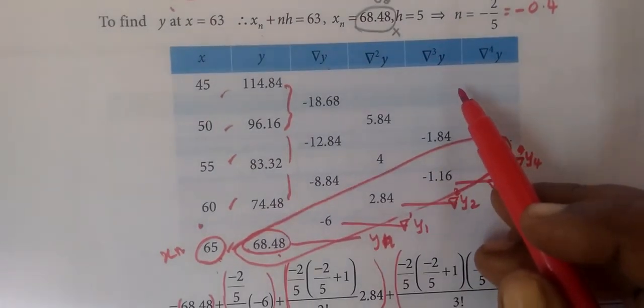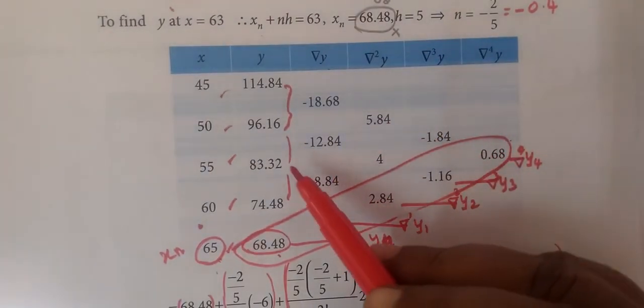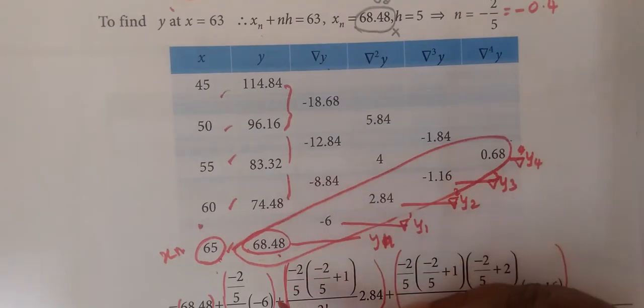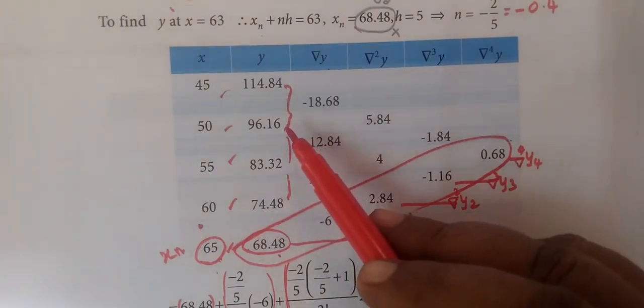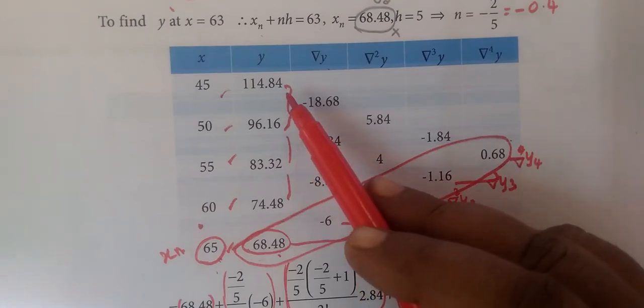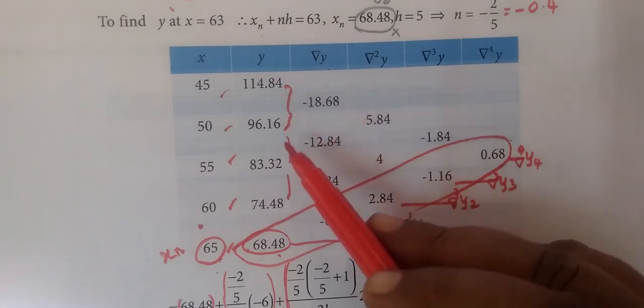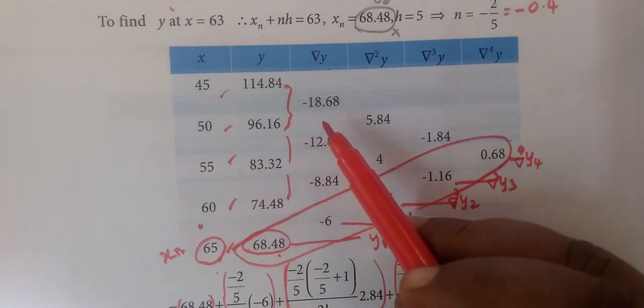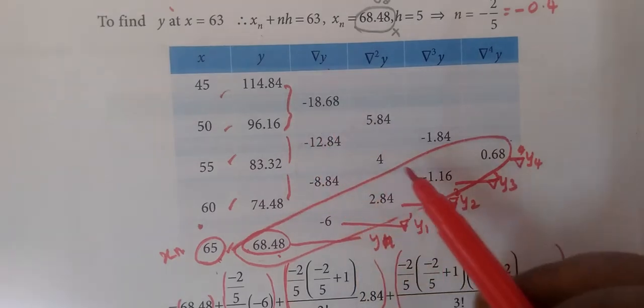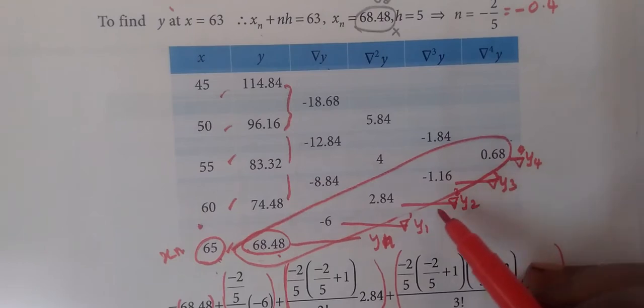Now we make a difference table. We have to find x, y and delta y values. This is separate. Separate is 96.16 minus 114.84, so smaller number minus greater number is separate. This is minus, so you can see all this in previous videos.